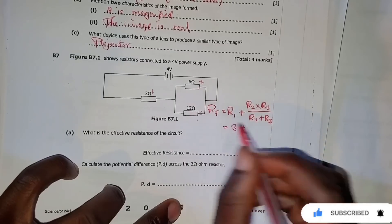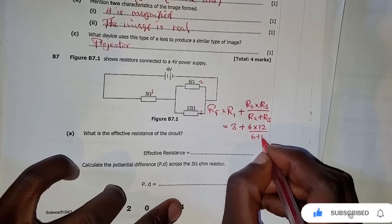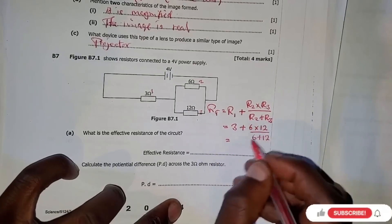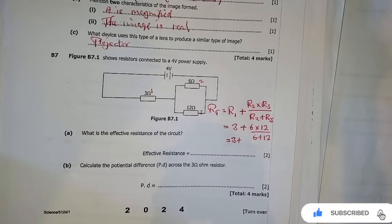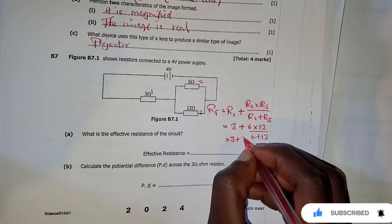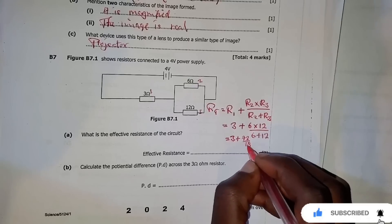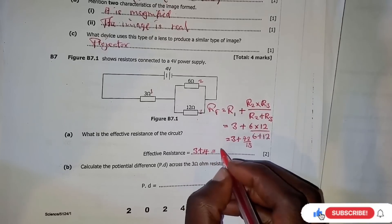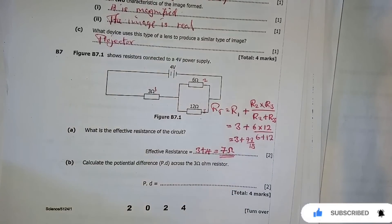So we have 3 + (6 × 12) / (6 + 12). Six times 12 is 72, divided by 18 equals 4. So the parallel combination gives 4 ohms. The total resistance is therefore 3 + 4 = 7 ohms. Seven ohms is the answer.